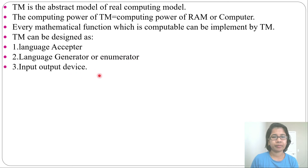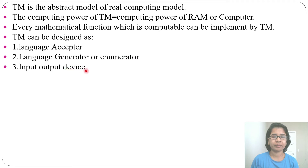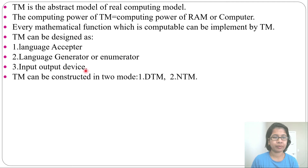A Turing machine can be designed as a language acceptor, language generator or enumerator, or an input-output device. Language acceptor means it will accept some string. Language generator or enumerator means it will produce some output. Input-output device means you can give some input and get some output.